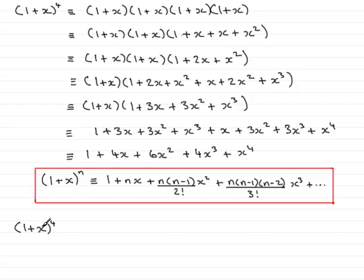Now comparing this to the expression up here, you can see that n is the 4. So this is going to be identical to 1 plus nx. So that will be 4 times x. So put 4 times the x. Then it goes on to say plus n times n minus 1. So that means that I have n at 4, n minus 1 is to reduce the 4 by 1, so that's 3.